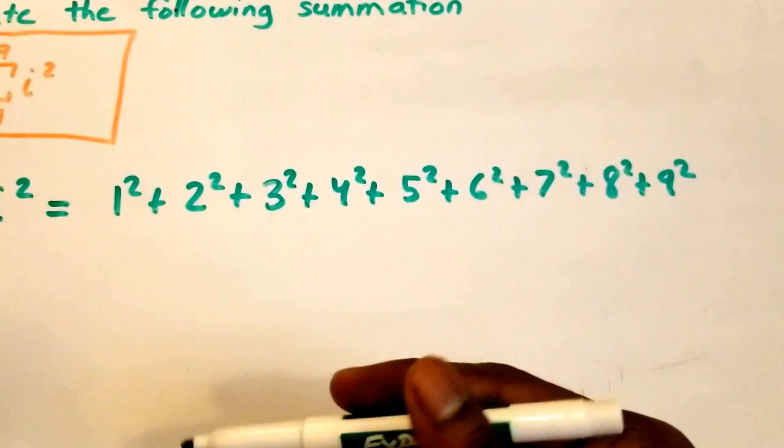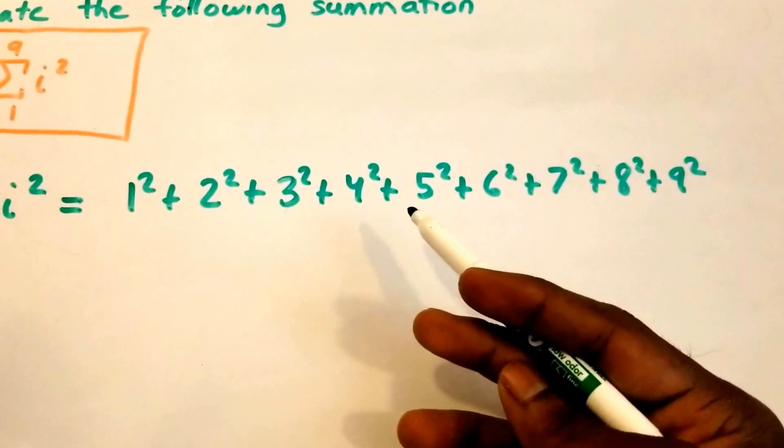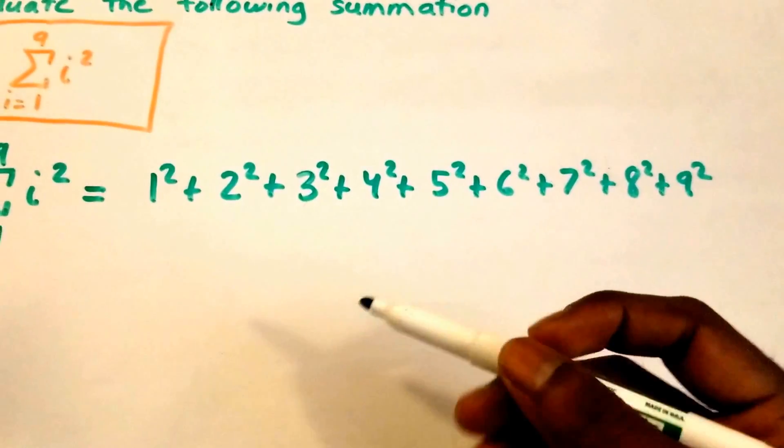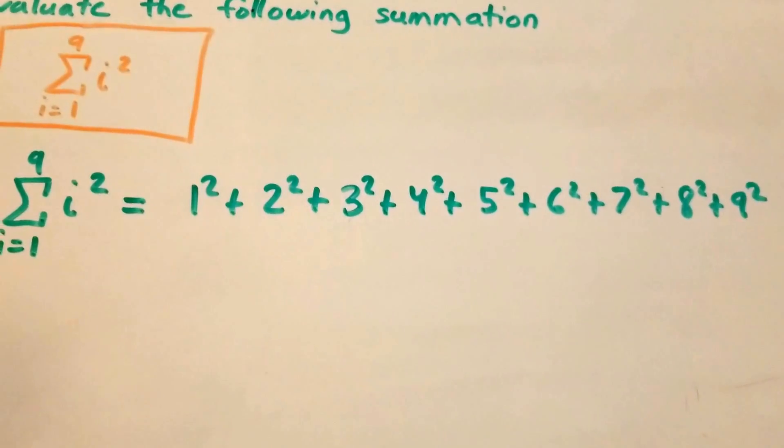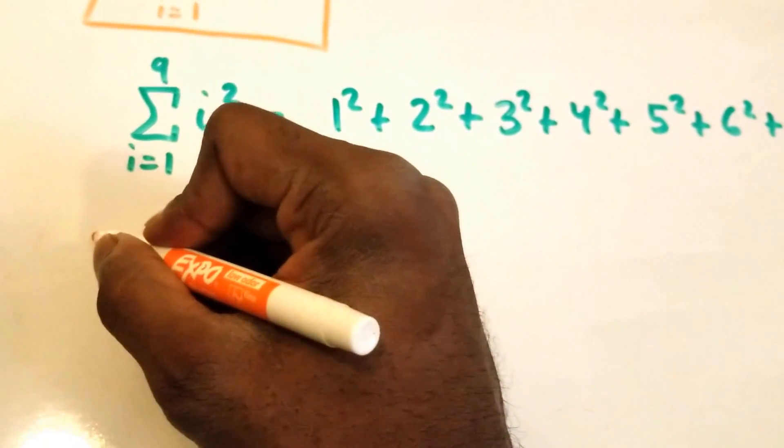And of course we could square these numbers and then add them together and get the answer. But a smarter way or a smarter solution would be to use a summation formula. So here we're gonna put a little note here.